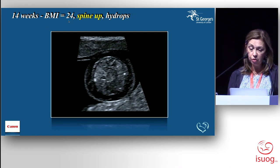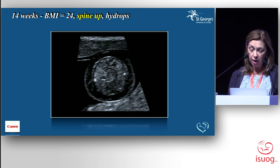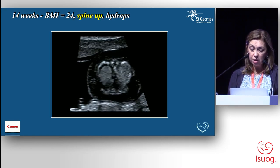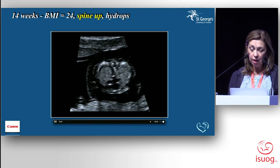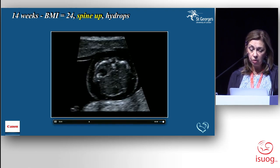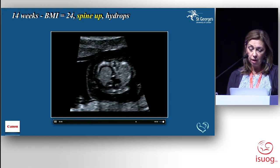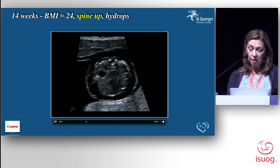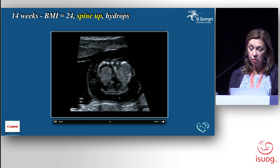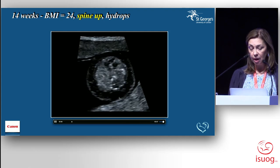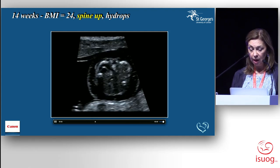Another example, 14 weeks, BMI 24, spine up. Lots of skin edema, baby hydropic. Scanning up and down, there's some pleural effusion as well. Even with the spine on top, it's clear that we have a complete atrioventricular septal defect — common valve, large primum ASD, and a large ventricular septal defect. So some technical difficulties, but you can still come across that and be able to get the information.